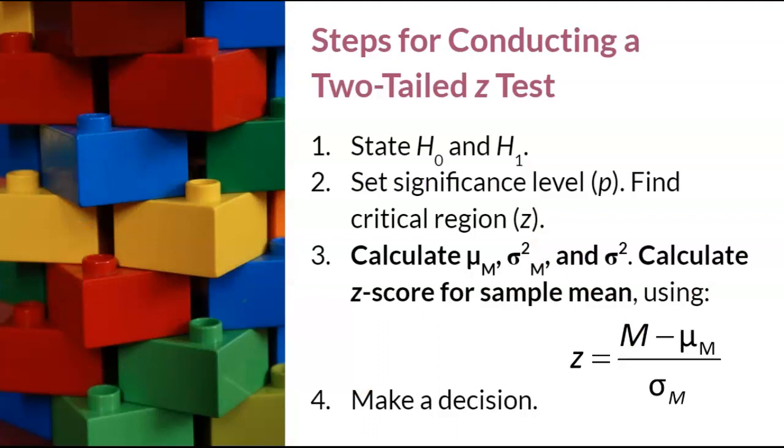This is a short summary of the four steps that we described above. Please note that these steps are for a two-tailed z-test. The one modification for this test is noted in bold in step 3. Please pause the video to write down these steps on the video handout.